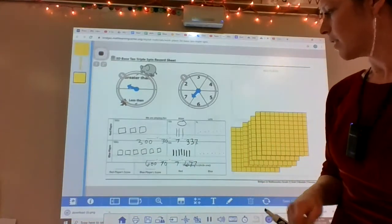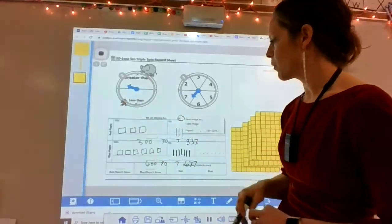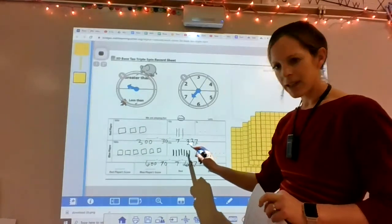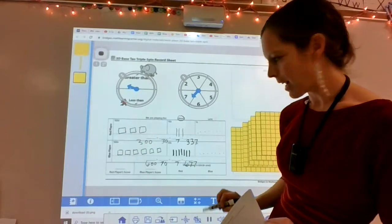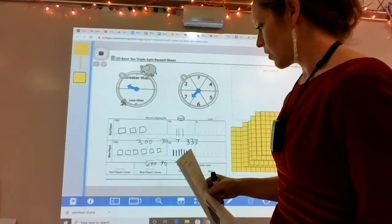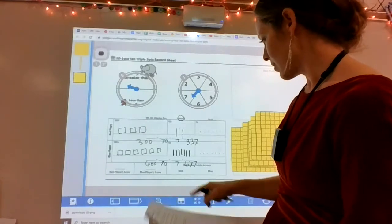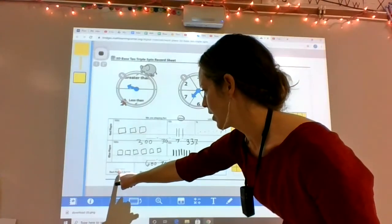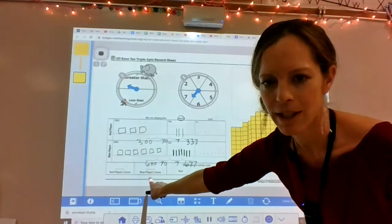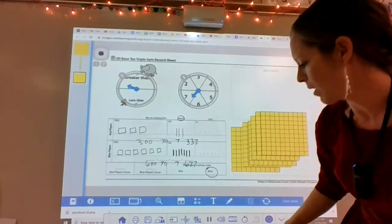Now remember, oops, that's not in the right spot anymore. In the beginning I spun for greater than, so now I have to compare. Is three hundred thirty seven greater than six hundred seventy seven? Nope. So blue player won that round. Red player score, you can write here, three hundred thirty seven. Blue player score, six hundred seventy seven. The winner is blue. Blue won that round.